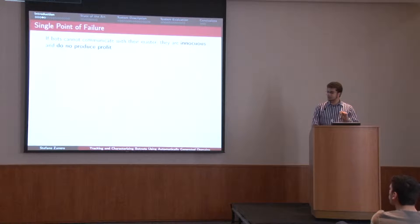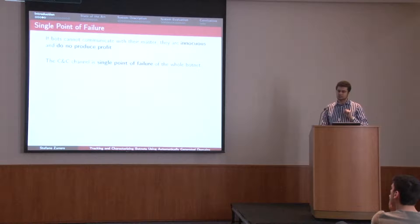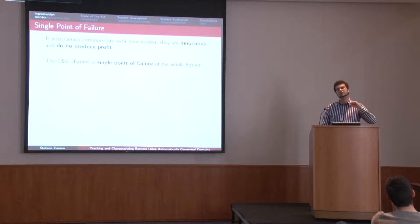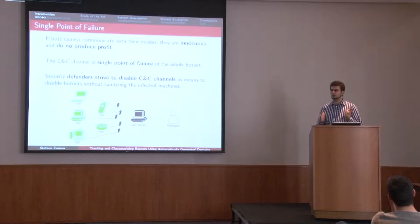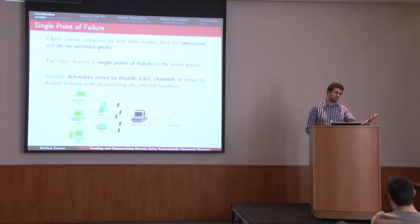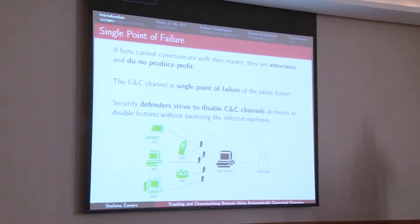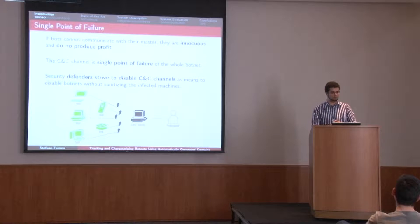This makes the command and control server the single point of failure of the whole botnet. If the botnet cannot reach the botmaster through the command and control, the botnet is effectively useless. Defenders try to disable command and control channels in order to take down botnets. Sometimes we are even able to take control of botnets and shut them down permanently. If you make the botmaster unable to use their command and control system, you have effectively, by all means, disabled the botnet.